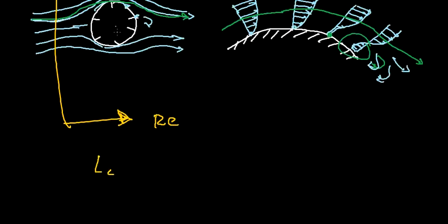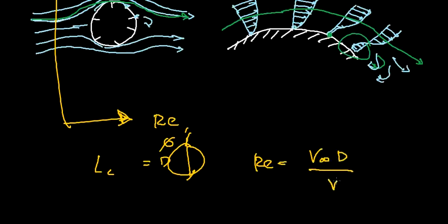The characteristic length Lc for a circular cylinder is taken to be equal to the diameter of this cylinder. Thus, the Reynolds number can be defined as the upstream velocity multiplied by this diameter and divided by the kinematic viscosity of the fluid.